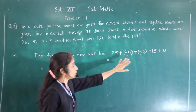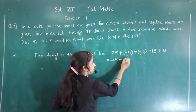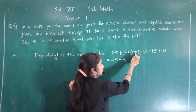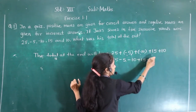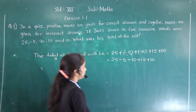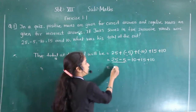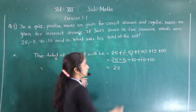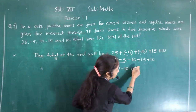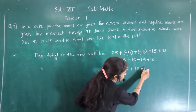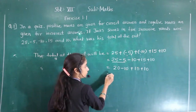Now let's open the brackets. 25, minus 5, minus 10, plus 15, plus 10. So 25 minus 5 equals 20. Then 20 minus 10 equals 10.